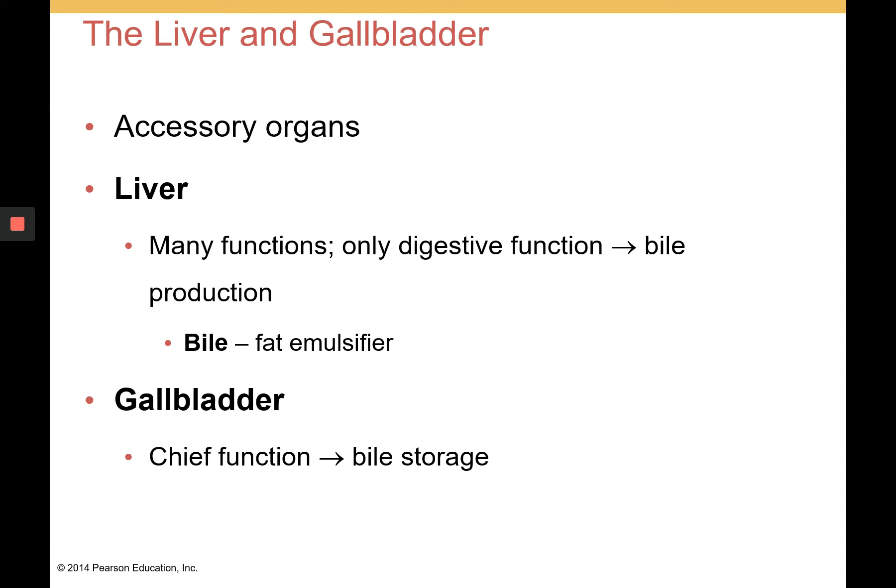Next we move into the accessory organs — especially the liver and gallbladder, which are closely associated with the small intestine, specifically the duodenum. The liver has many functions, including detoxification, but its only digestive function is to produce bile. Bile is a fat emulsifier; it helps break down large globules of fat into smaller ones, making it easier for lipase — a fat-digesting enzyme — to act upon.